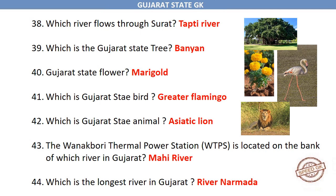Which is the Gujarat state tree? Banyan. What is Gujarat's state flower? Marigold. Which is Gujarat's state bird? Greater Flamingo. Which is Gujarat's state animal? Asiatic Lion. The Wanakbori Thermal Power Station is located on the bank of which river in Gujarat? Mahi River.